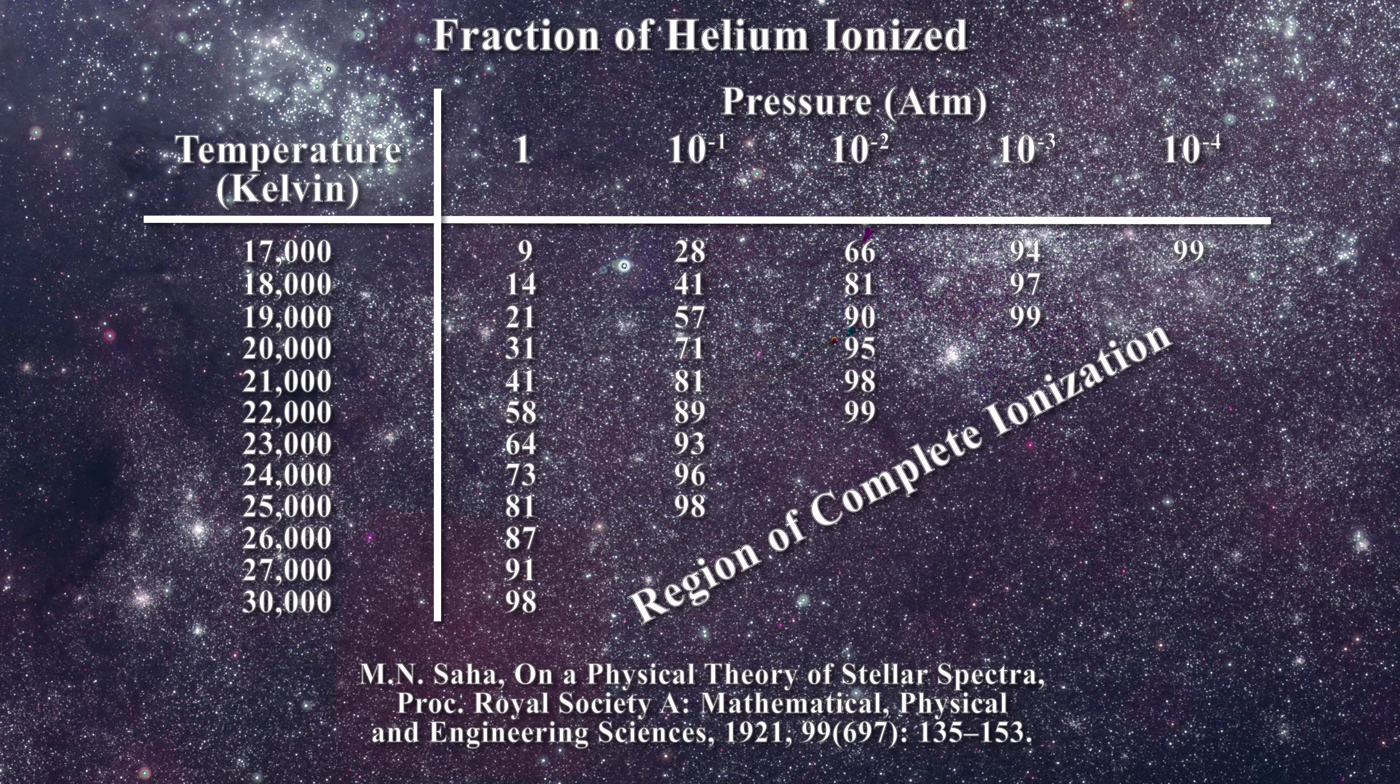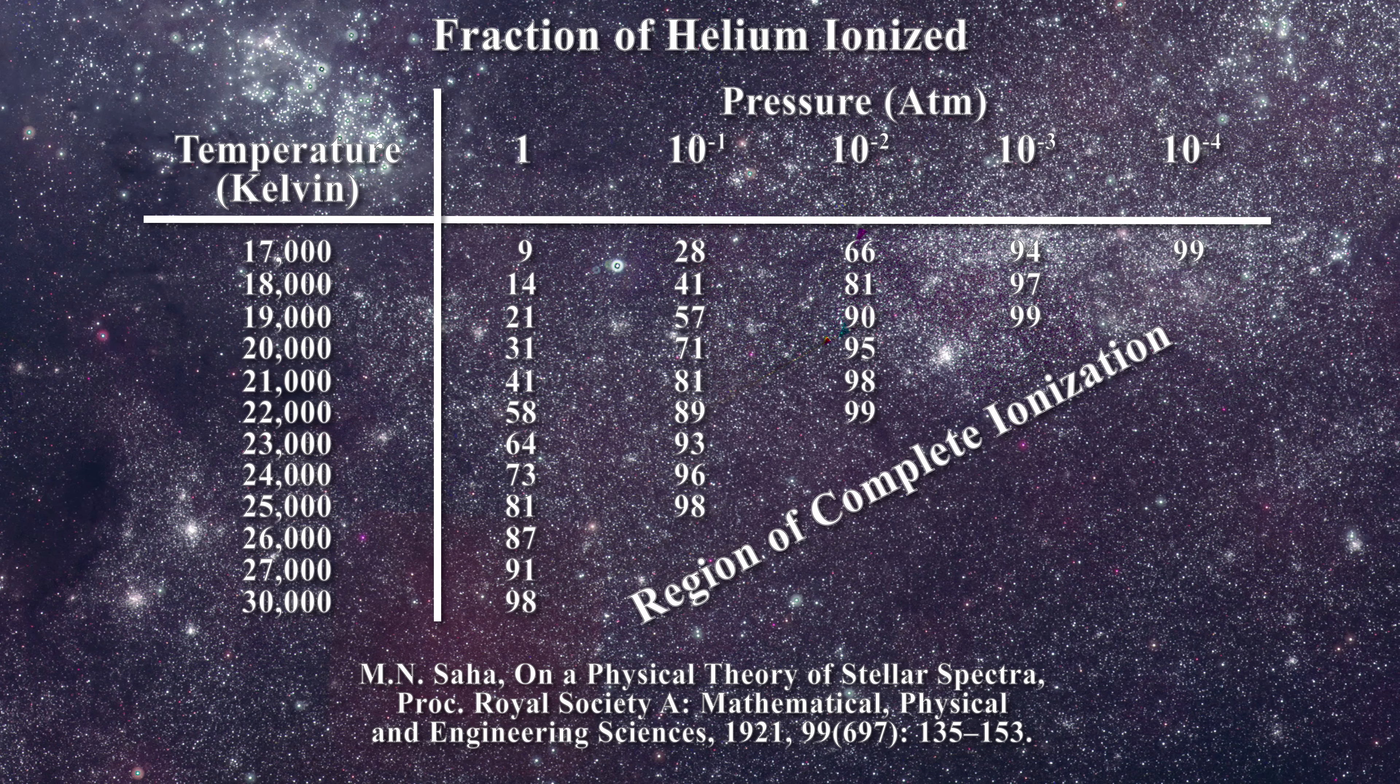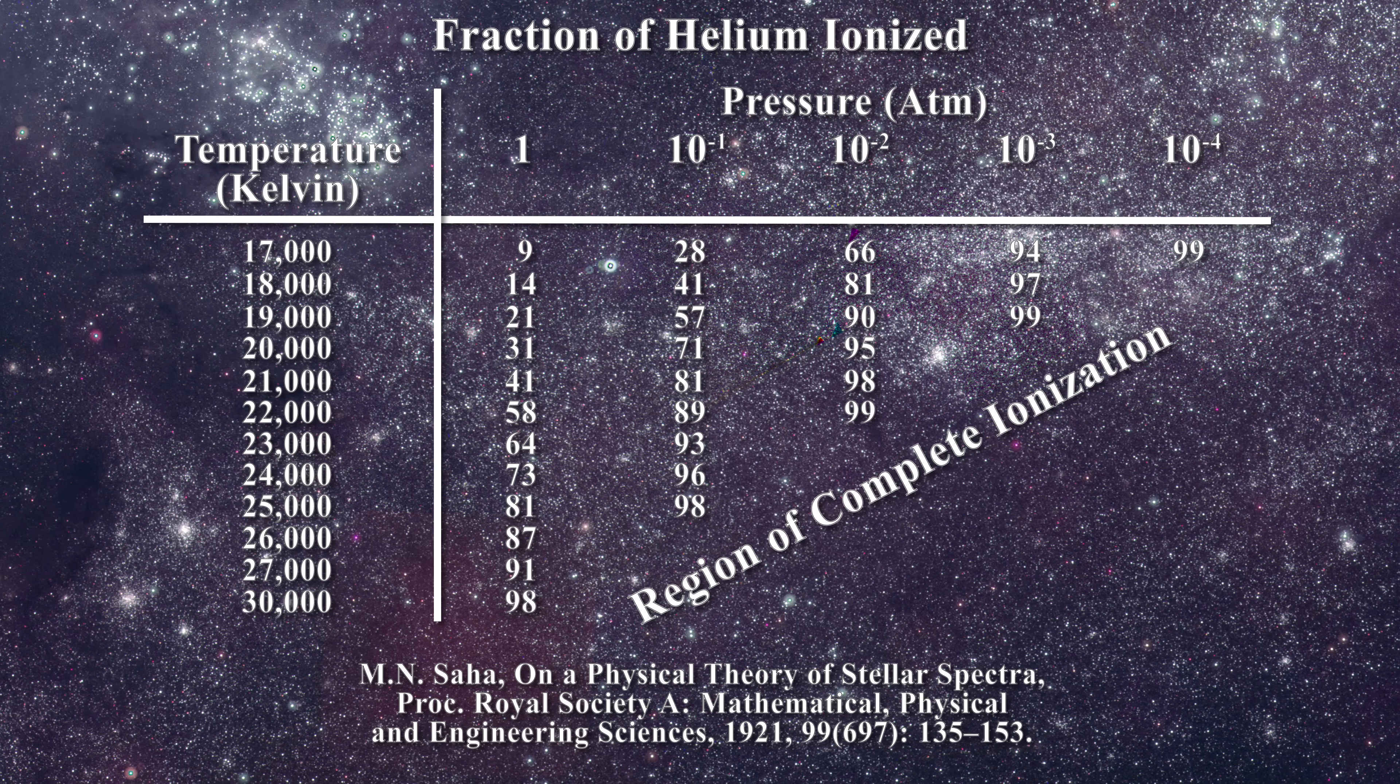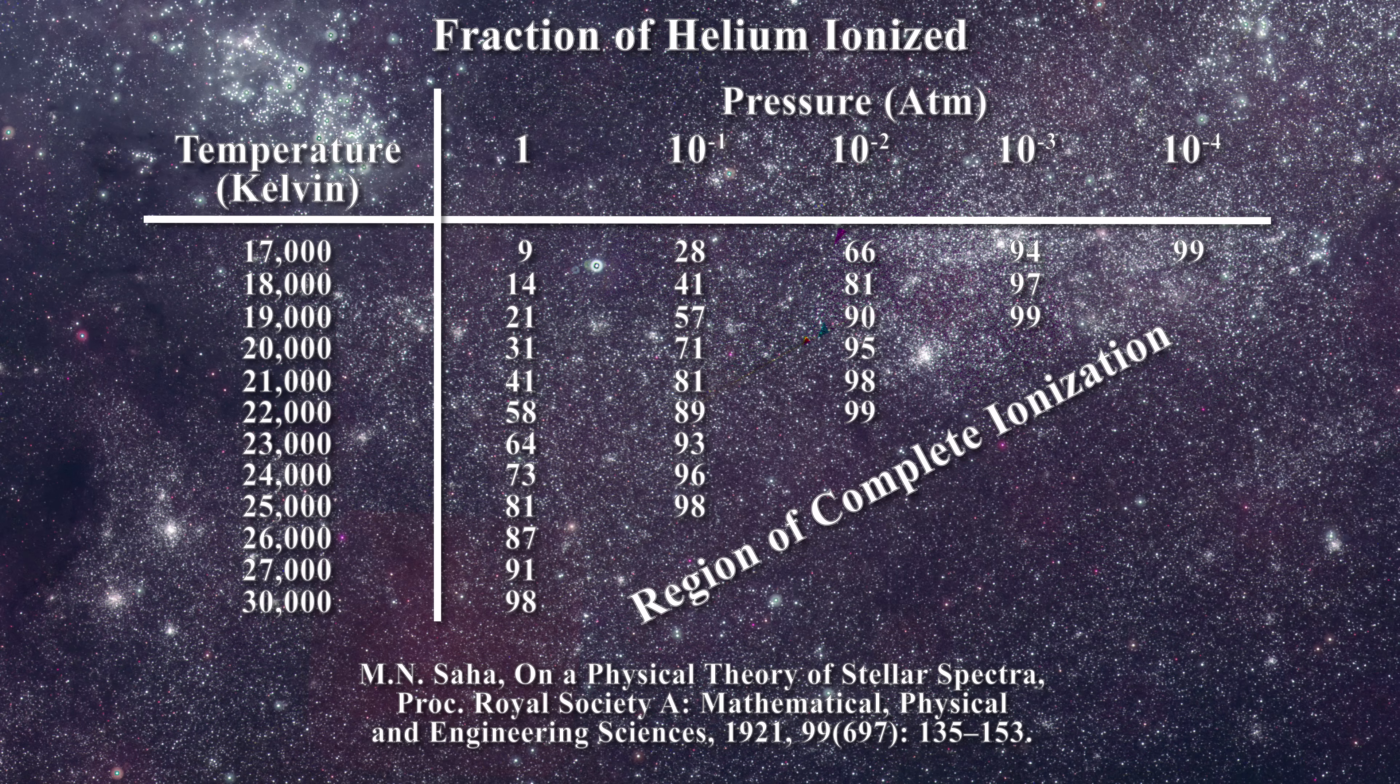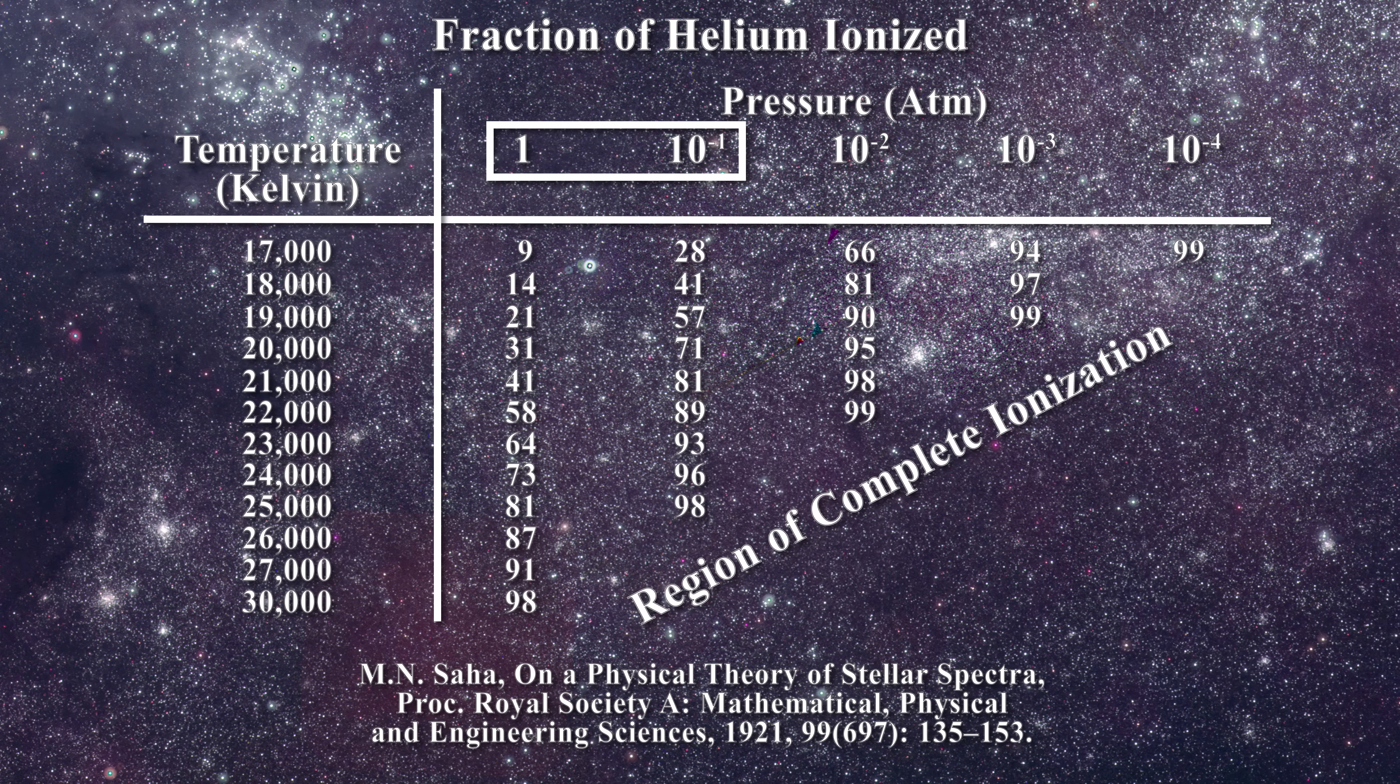Saha's work received worldwide acclaim by the astrophysics community. Saha initially believed that the pressure of the solar chromosphere was in the range of 0.1 to 1 atmosphere much like the atmospheric pressure on earth.